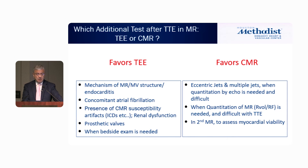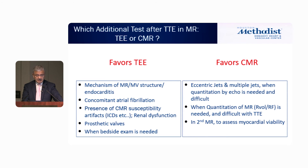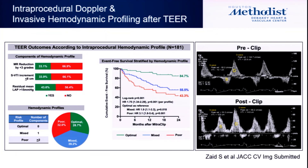If you are doing a transthoracic examination and need more information, what would tilt you toward transesophageal echocardiography is knowing the mechanism, concomitant atrial fibrillation, susceptibility artifact, or prosthetic valves — or if needed at the bedside. What favors MRI is quantitation, certainly in secondary MR, and if you're looking for viability and scarring. The big issue is quantitation with cardiac MRI.